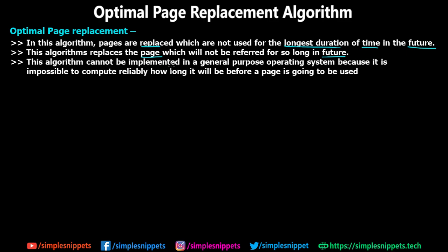In reality, this algorithm cannot be implemented in general-purpose operating systems because it is impossible to compute reliably how long it will be before a page is going to be used. In an actual processing system — your laptop, desktop, or any complex OS — there are so many processes divided into many pages. At any given moment the replacement algorithm cannot predict which pages will be required next, since processing happens in microseconds and nanoseconds. That is why optimal page replacement is not practically implemented; it is only theoretical in nature.